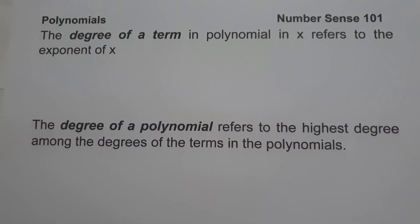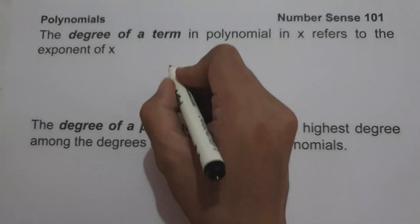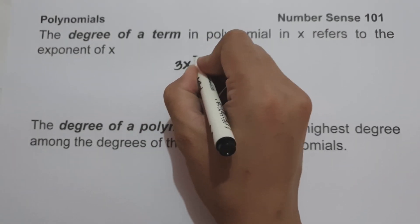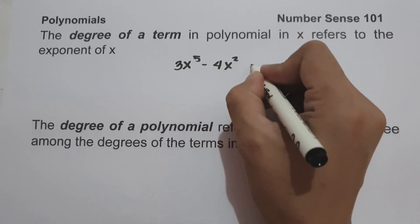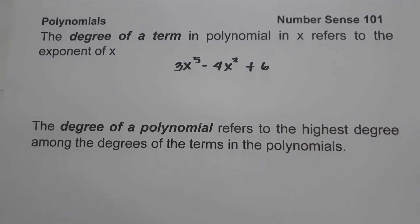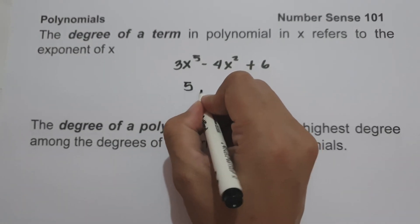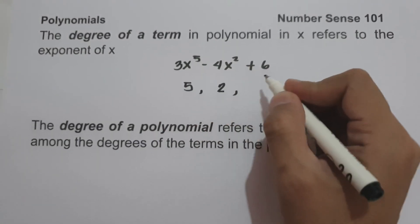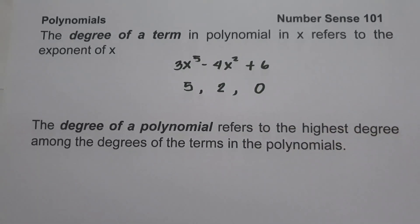In studying polynomials, there is what we call the degree of a term and degree of a polynomial. The degree of a term in a polynomial in x refers to the exponent of x. For example, in the trinomial 3x raised to 5 minus 4x squared plus 6, the degree of the first term is 5, the degree of the second term is 2, and the degree of the last term is 0. Always remember, the degree of any real number except 0 is 0. So the degrees of the terms are 5, 2, and 0.